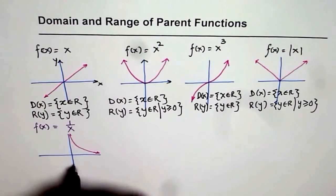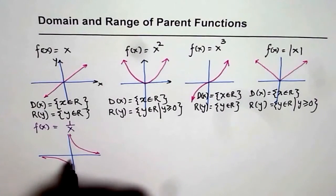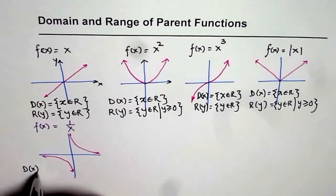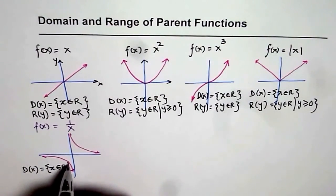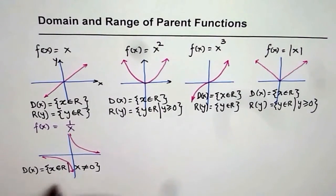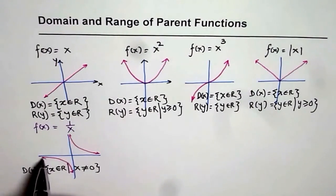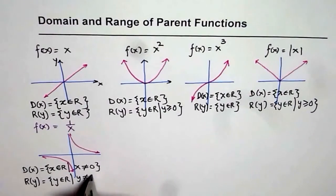It has a vertical asymptote at x equals to 0 and a horizontal asymptote at y equals to 0. The value of x can never equal 0, so there is a restriction in the domain. We write: domain of this function equals the set of all values of x where x belongs to real numbers, but x is not equal to 0. Similarly, since the x-axis is a horizontal asymptote, range is the set of y values where y belongs to real numbers, but y is not equal to 0.